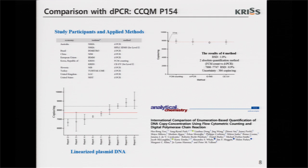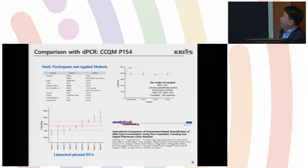Based on the plasmid counting technology, we coordinate international comparison study, CCQM P-154. It was to compare digital PCR and our counting methods for calibration-free quantification of plasmid DNA. Participants listed here and assignment of reference values and the comparison results are shown here and the final results were published in Analytical Chemistry in 2016. It was the first comparison of calibration-free methodologies for quantification of DNA.